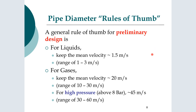Some general rules of thumb, useful for back-of-the-envelope calculations or your preliminary design phase. The first is that for liquids, you want to keep the mean velocity in the pipe at about 1.5 meters per second. For gases, keep the mean velocity around 20 meters per second, so in the range of 10 to 30. When we go to higher pressures, it can go faster in the range of 30 to 60 meters per second.